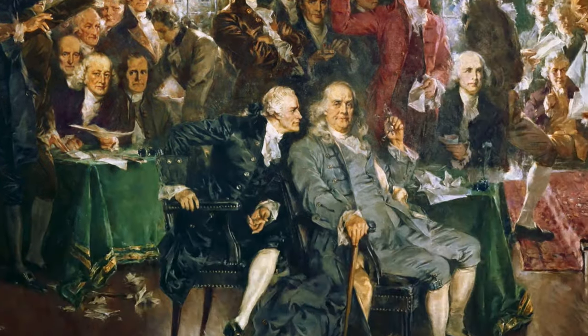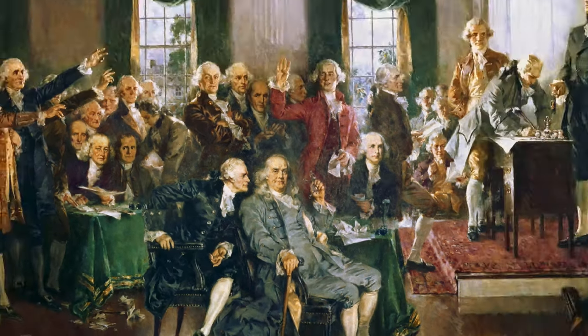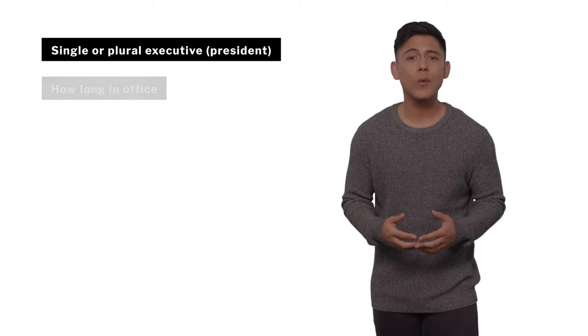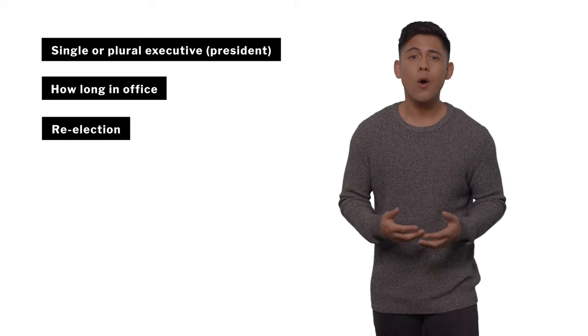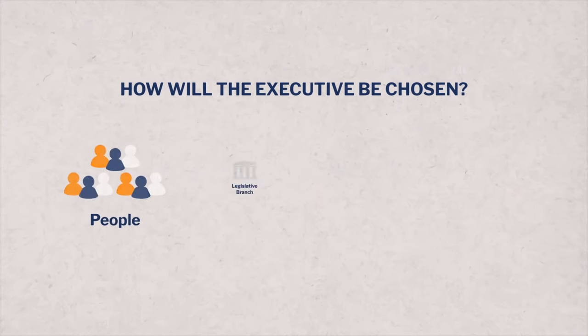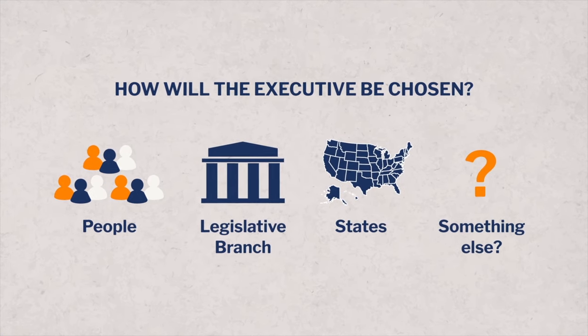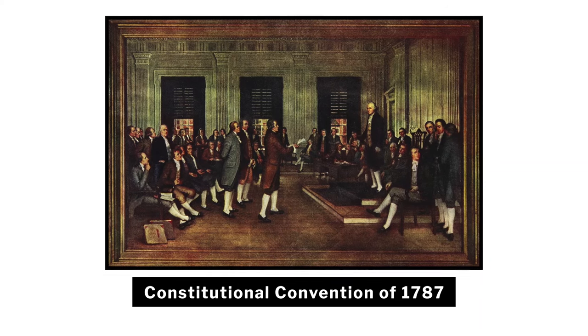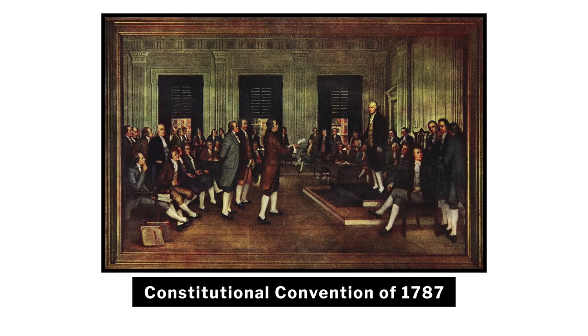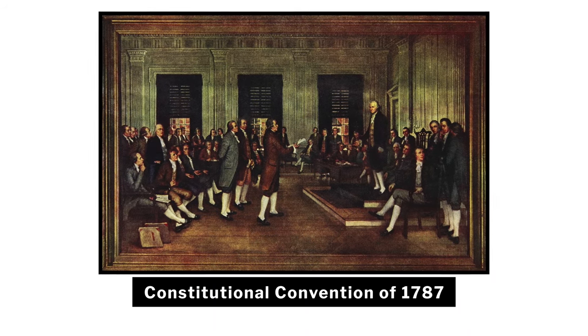Many influential debates took place at this convention. These included whether America would have a single or plural president, how long they would hold office, whether they'd be eligible for re-election, and how the election would be decided. Would the people vote? Would the legislative branch vote? Or something entirely different? This was major, as our young country was deciding how it would choose its executive.